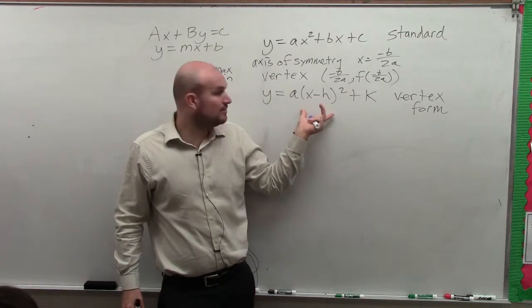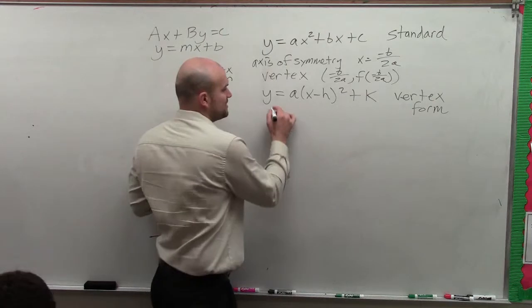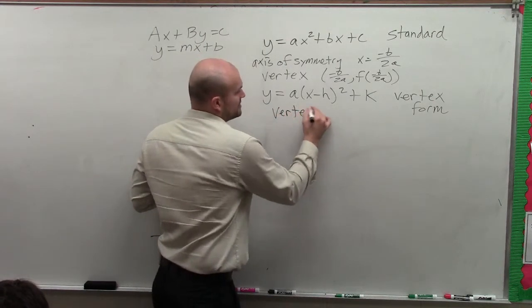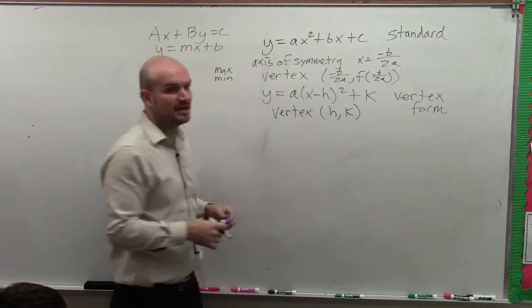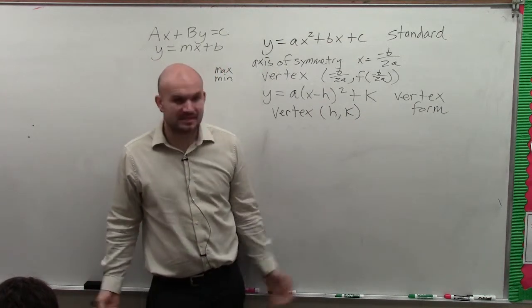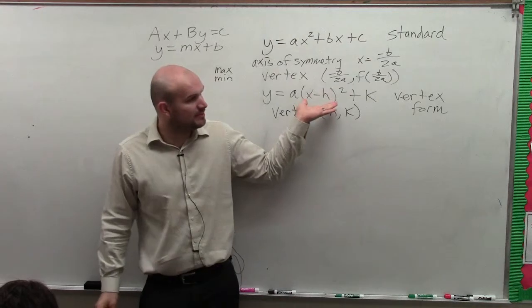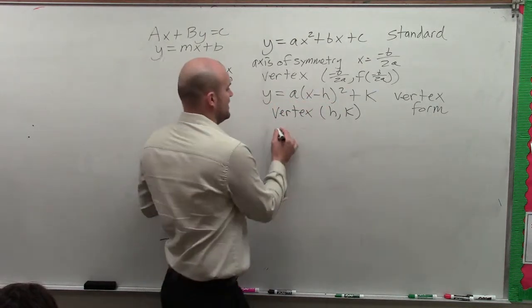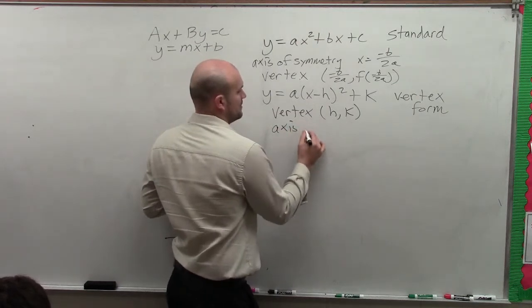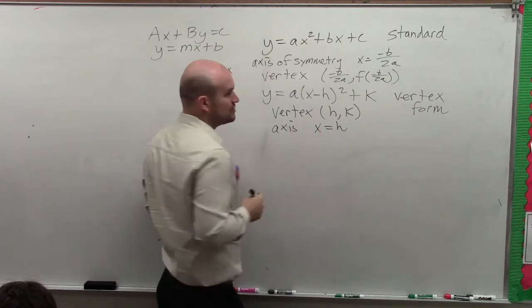So this is what we have, vertex form. The reason why it's called vertex form is because the vertex in this problem is simply the coordinate point h comma k. That's it. So whenever you have a problem in this format, you can identify that the vertex is just h comma k, and the axis of symmetry is just x equals h.